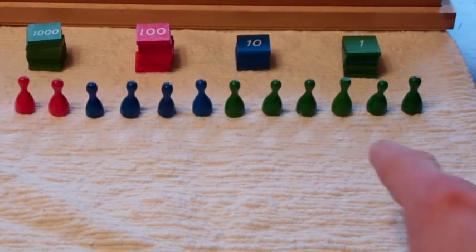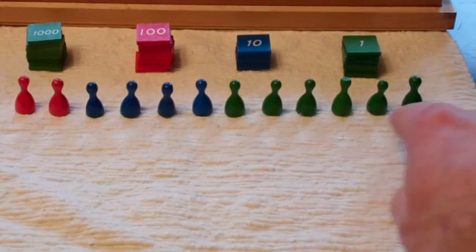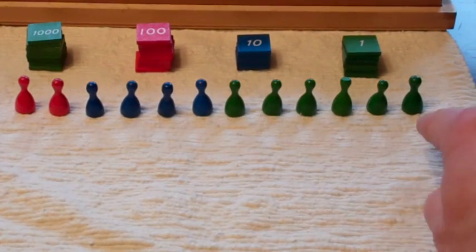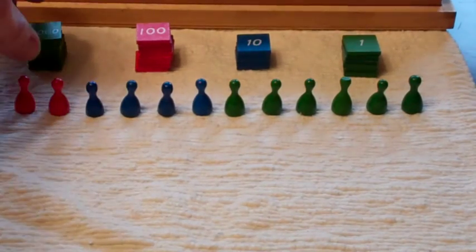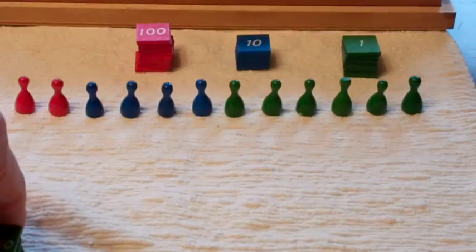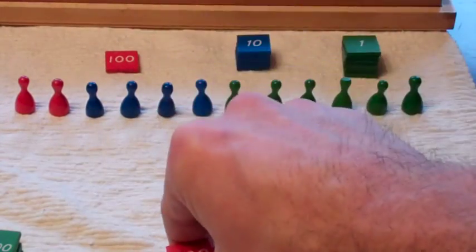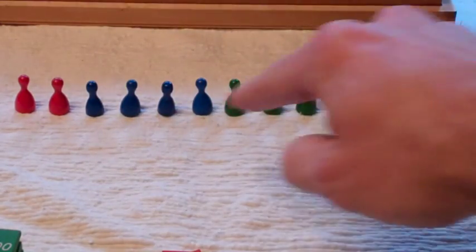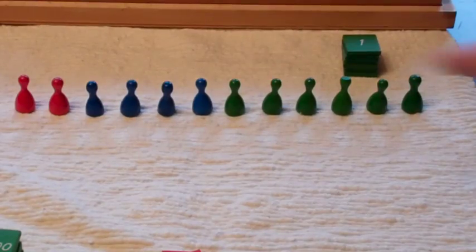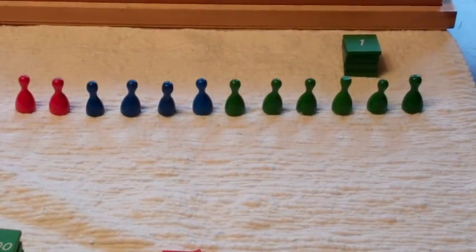Remember, in division, the answer is going to be with the units, and the answer will be what one person gets. So we're going to start by dividing up our thousands. They'll go to the hundreds. Our hundreds will go to the tens. And our tens will go to the units. And remember, we work across, not down. We build row by row by row.